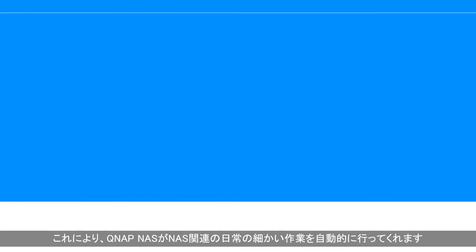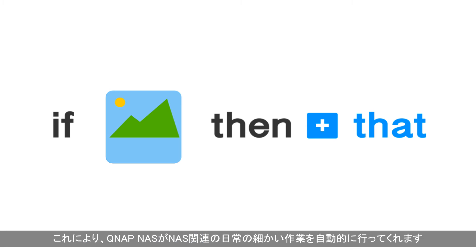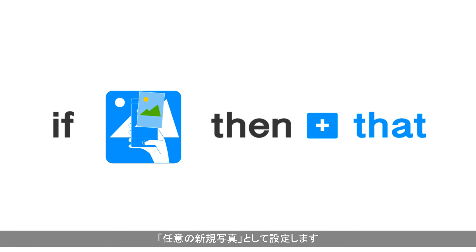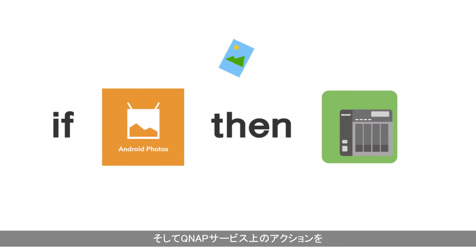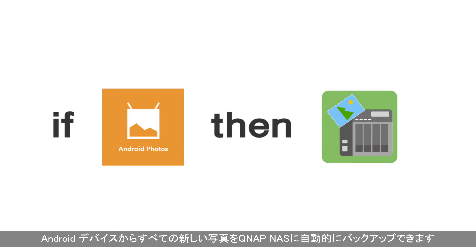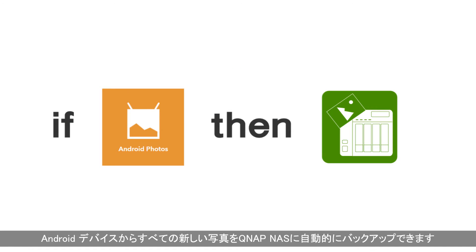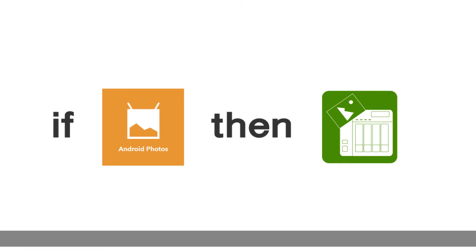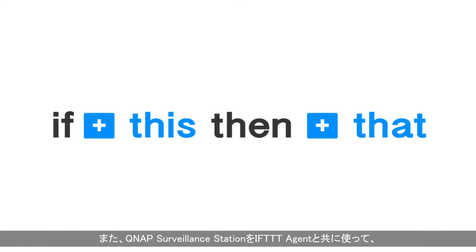For example, you can set the trigger on Android Photo Service as Any New Photo and the action on QNAP Service as Download File from URL. Then you can automatically back up all your new photos from your Android devices to the QNAP NAS.